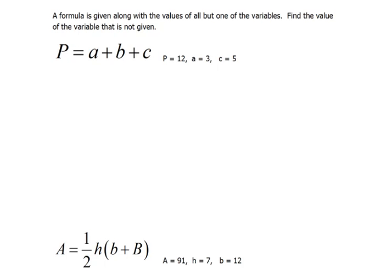So here we have an equation that says P equals A plus B plus C. This is actually the perimeter formula for a triangle. Now they've given us that P equals 12, A equals 3, and C equals 5.